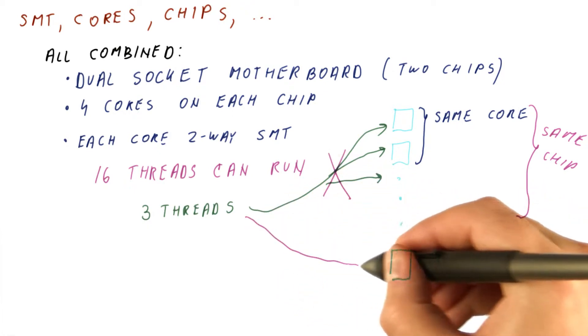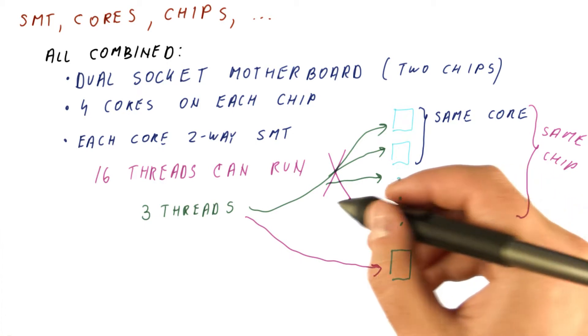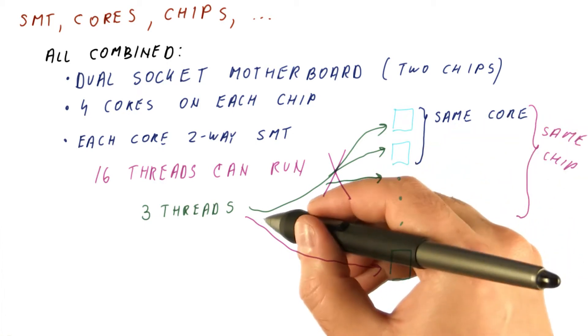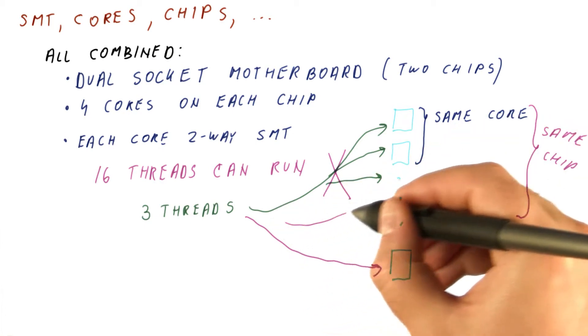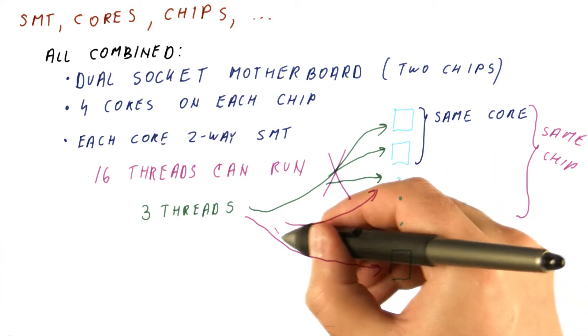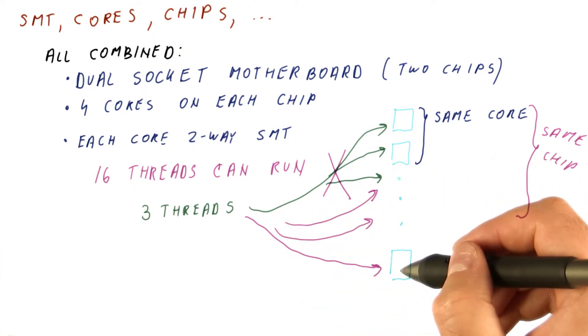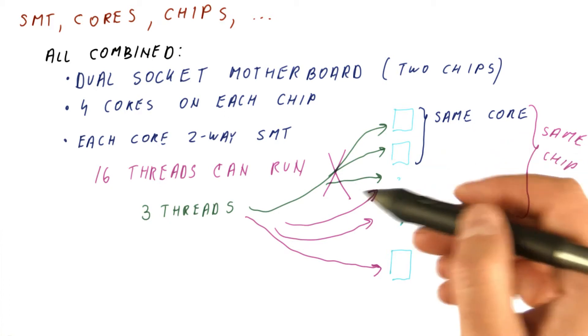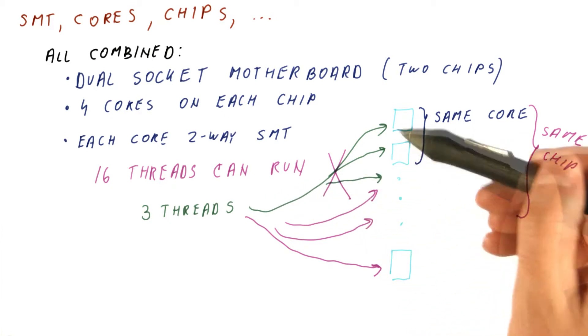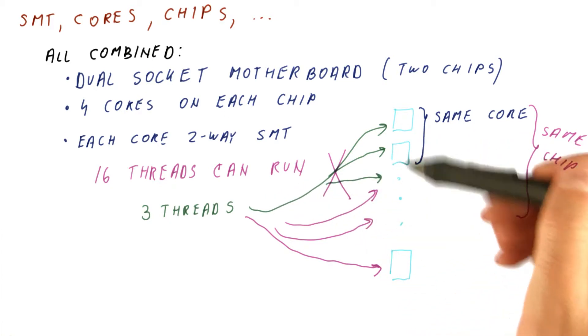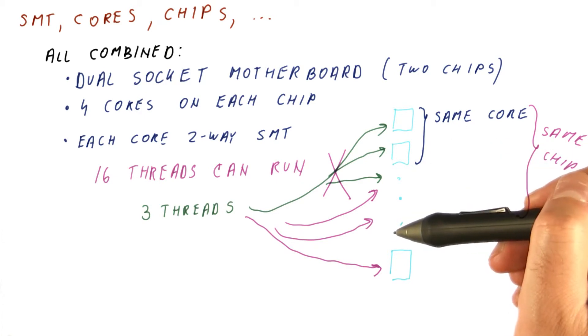So a much smarter policy for using three threads would be to put them on different chips if we can, and definitely on different cores if we can, so that they don't compete. So the idea would be that you would first run threads such that they are distributed among the chips so that you maximize the cache capacity that you're benefiting from.